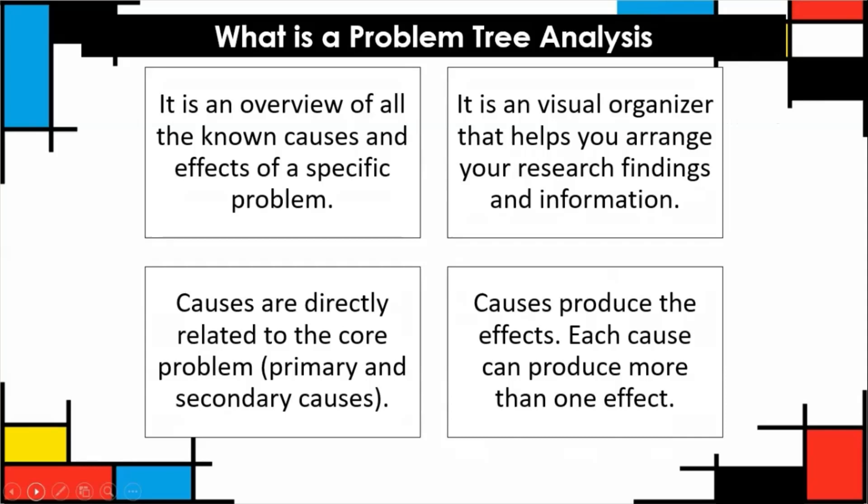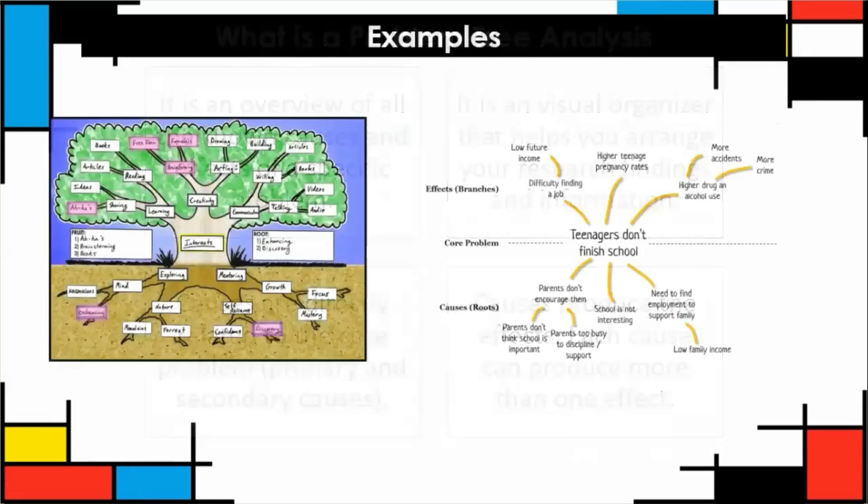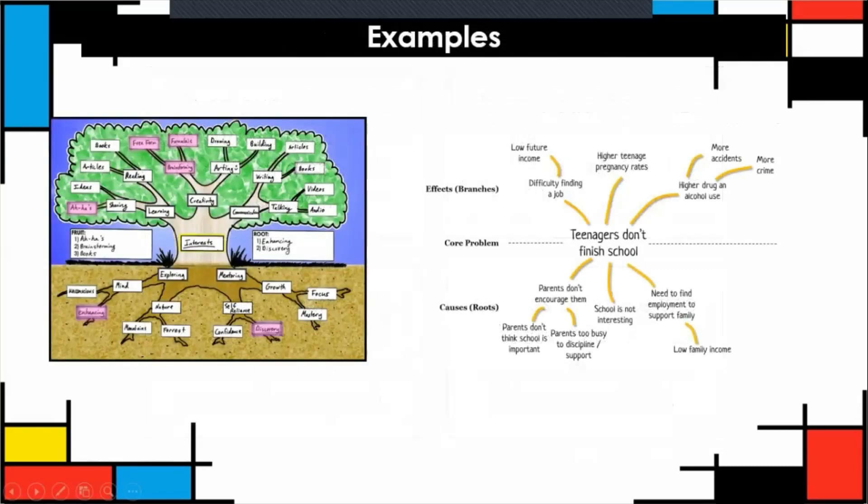Here are the examples. This is the format I want you to use. You see how they use a tree: the parts of the tree, the trunk, the roots, and the branches. It's also colorful and they use all the space of the paper. Now I want you to look to the right. Here is an example with information.